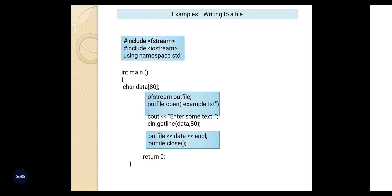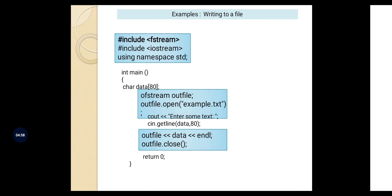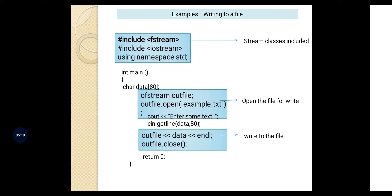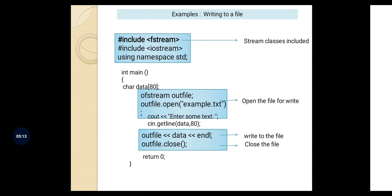To revisit the steps involved in writing to a file: first, include the stream classes; second, open the file for writing; third, write to the file; and finally, close the file — which is an important part.